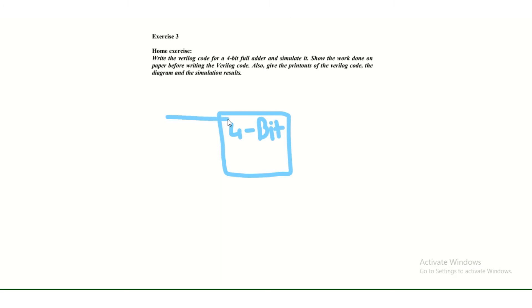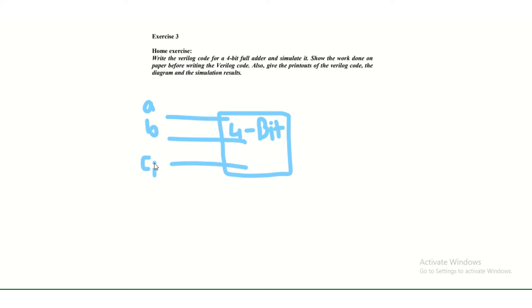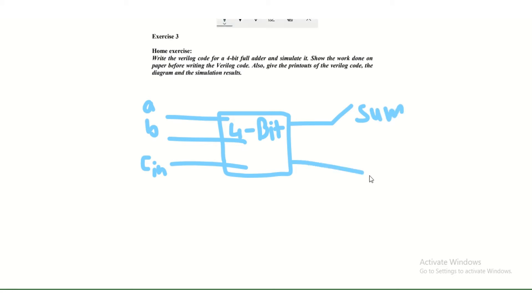A 4-bit adder has 3 inputs: A, B, and carry-in. It has 2 inputs and 1 carry-in, and as output it has 2 outputs and 1 carry-out.